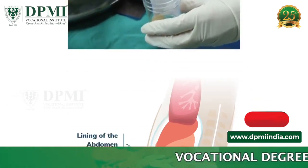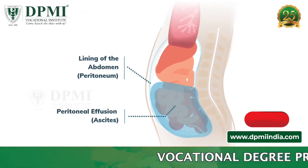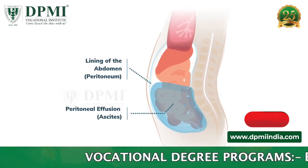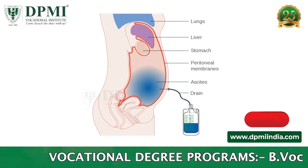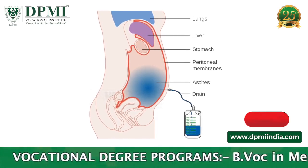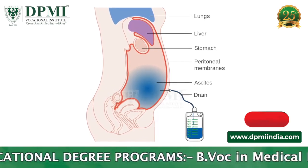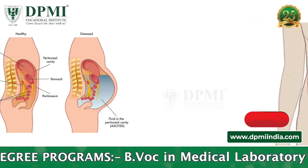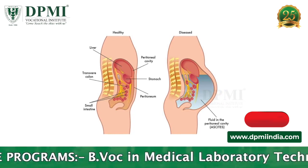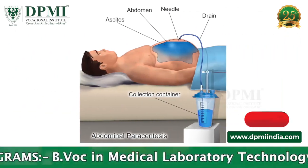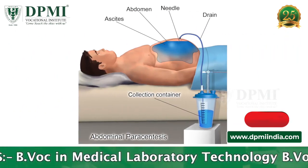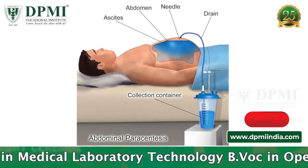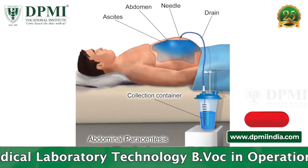Peritoneal fluid is a serous fluid made by the peritoneum in the abdominal cavity, which lubricates the surface of tissue that lines the abdominal wall and pelvic cavity. It covers most of the organs in the abdomen. An increased volume of peritoneal fluid is called ascites. The procedure in which a thin tube is inserted into the abdomen to remove the fluid from the peritoneal cavity is called paracentesis.